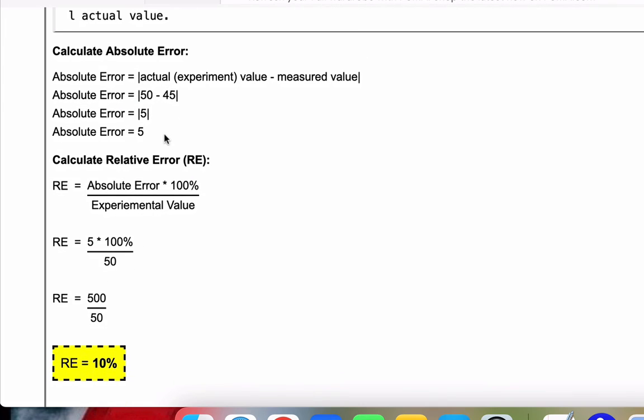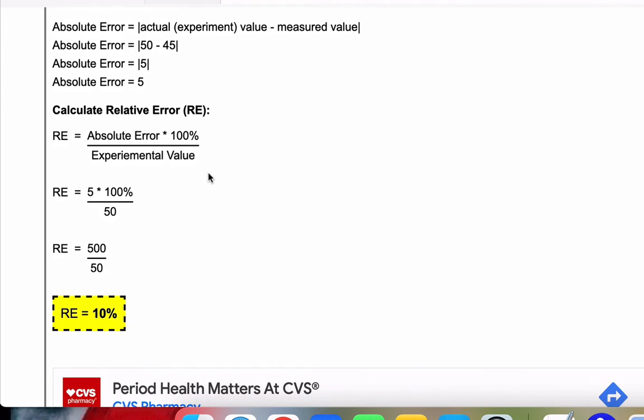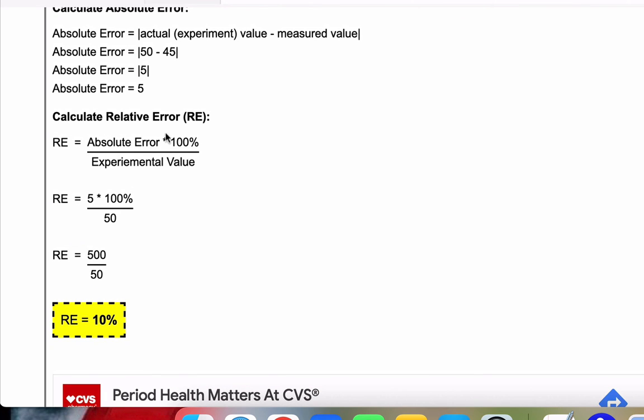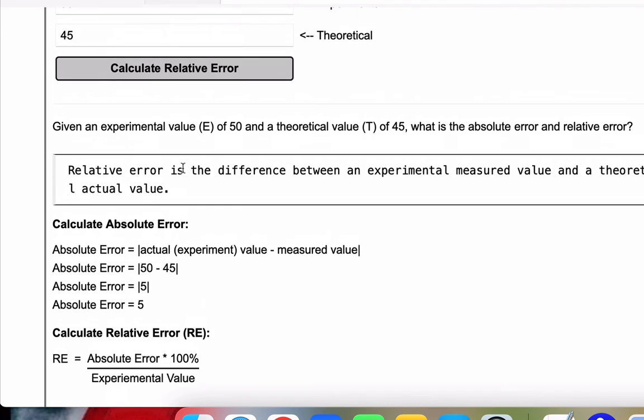So now we have our absolute error. Let's calculate the relative error. And the relative error is just the absolute error times 100% over the experimental value. Absolute error was 5. Our experimental value above here was 50.